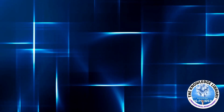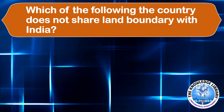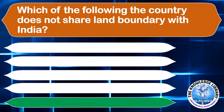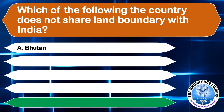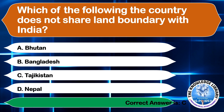Which of the following countries does not share a land boundary with India? A. Bhutan, B. Bangladesh, C. Tajikistan, or D. Nepal. The correct answer is option C, Tajikistan.